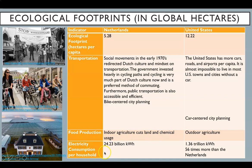Finally, let's consider electricity consumption per household: 24.23 billion kilowatt-hours in the Netherlands compared to 1.36 trillion kilowatt-hours in the United States — that's 56 times more electricity consumption per household than the Netherlands. This difference in household consumption also illustrates that ecological footprints can vary from person to person. All of these choices contribute to the Netherlands' lower ecological footprint as compared to the United States.